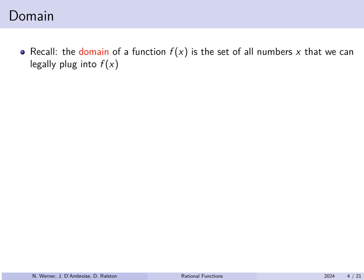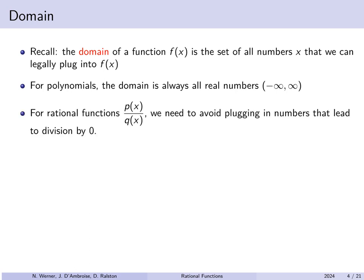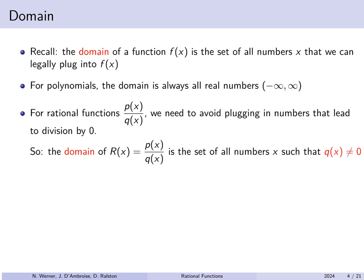The domain of a function is the set of all numbers x that can be plugged in to F of x. For a polynomial, the domain was all real numbers — raising numbers to positive integer powers, multiplying by numbers and adding the results together, there was no restriction. But for a rational function P of x over Q of x, we cannot divide by 0, so we need to avoid plugging in numbers that would lead to division by 0. The domain of a rational function is all numbers except those for which the denominator is equal to 0.